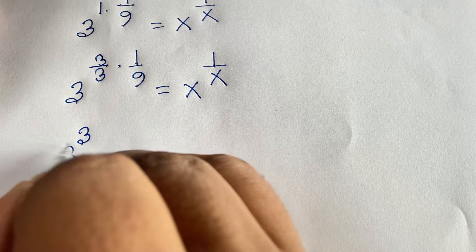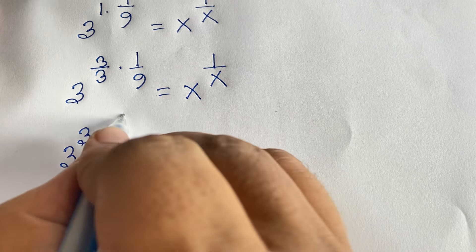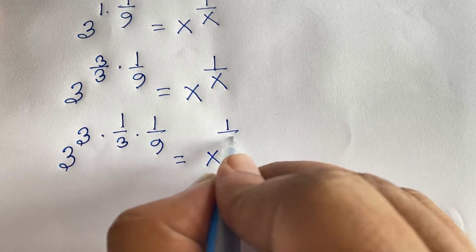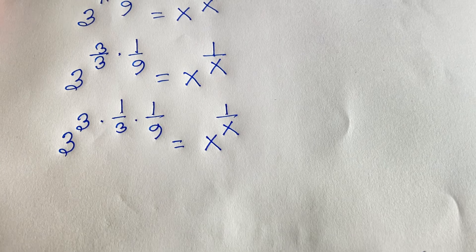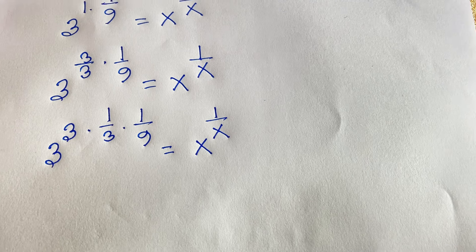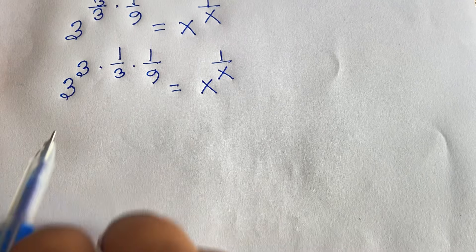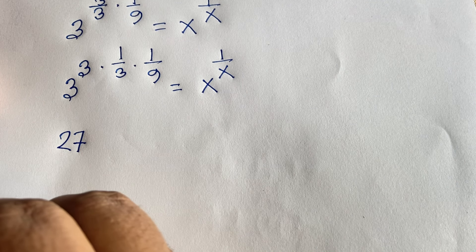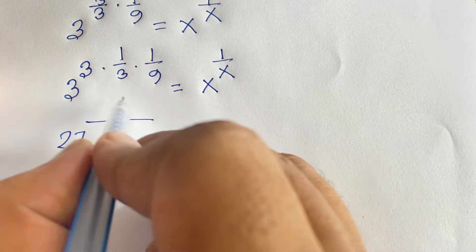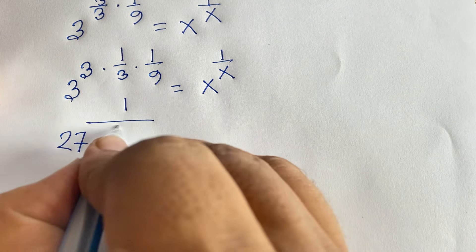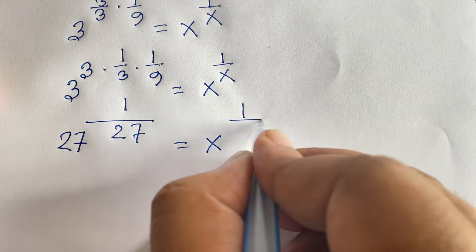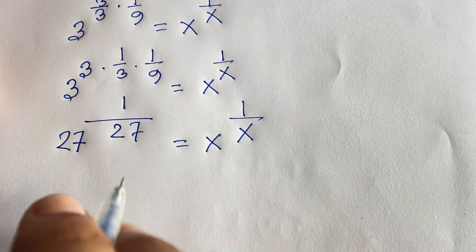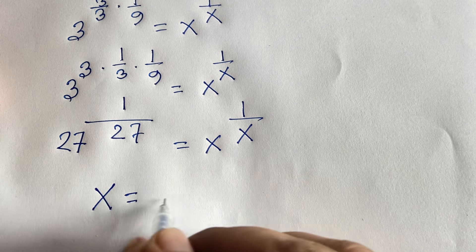Simplifying: 3 to the power 3 is 27. The exponent becomes 1 over 3 times 1 over 9 — wait, we get 1 over 27 overall. So we have 27 to the power 1 over 27 is equal to x to the power 1 over x. Since both sides match, we conclude x is equal to 27. This is our final answer.